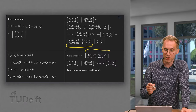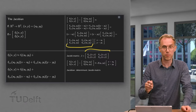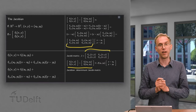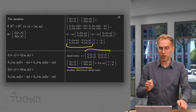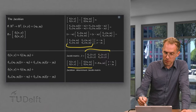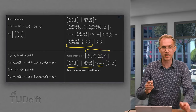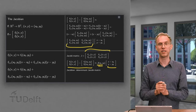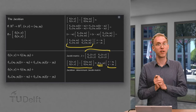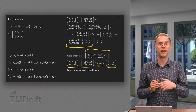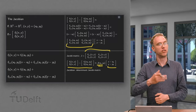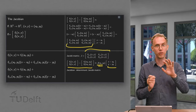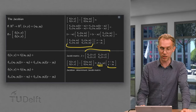Now we can see how to use this matrix. If you plug in (x₀, y₀), you see that f₁ minus f₁ at the point, and similarly for f₂, is approximately equal to the Jacobi matrix evaluated at (x₀, y₀) times the vector (x minus x₀, y minus y₀). The Jacobian is simply the determinant of the Jacobi matrix — once you know the Jacobi matrix, you also know the Jacobian.